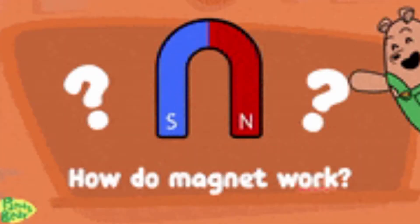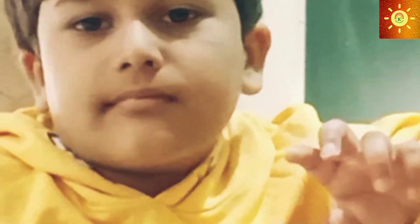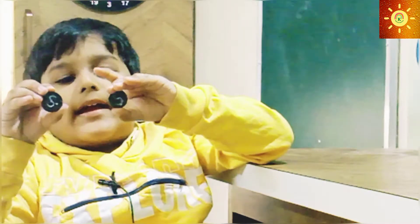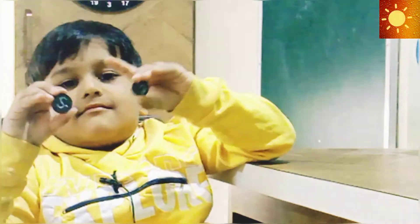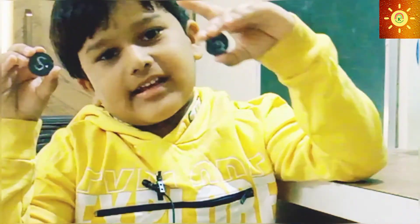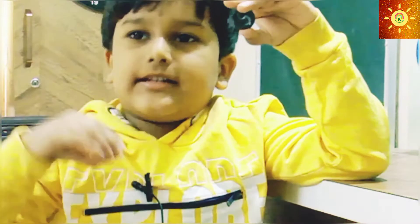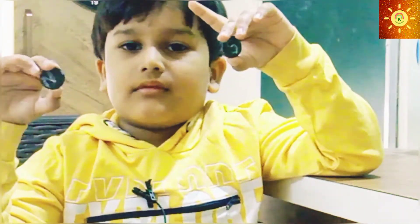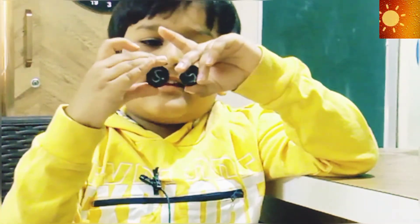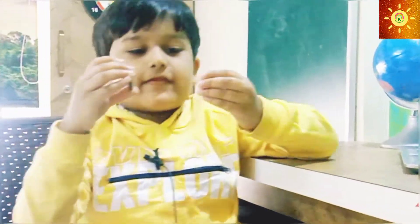A magnet has two poles — south pole and north pole. So you can see I have two magnets. I have one with the south pole and one with the north pole. Look, if I bring them close like this...